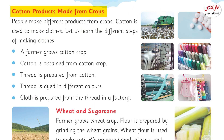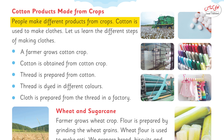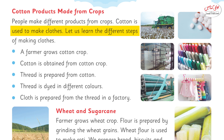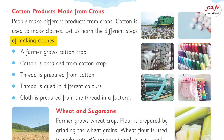Cotton products are made from crops. People make different products from crops. Cotton is used to make clothes. Let us learn the different steps of making clothes.